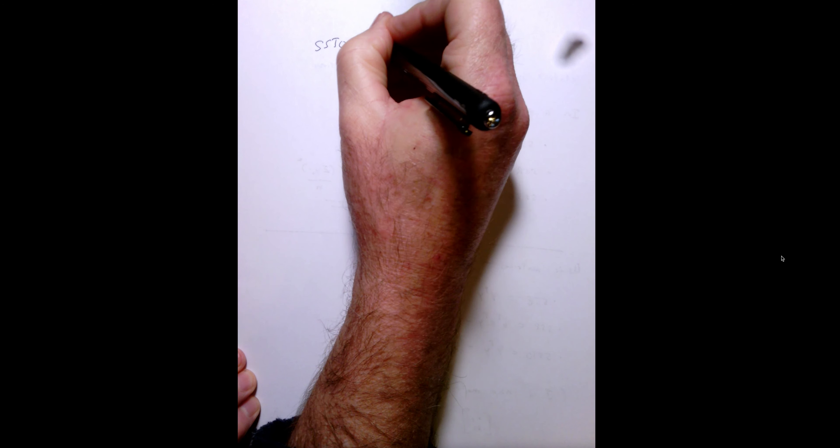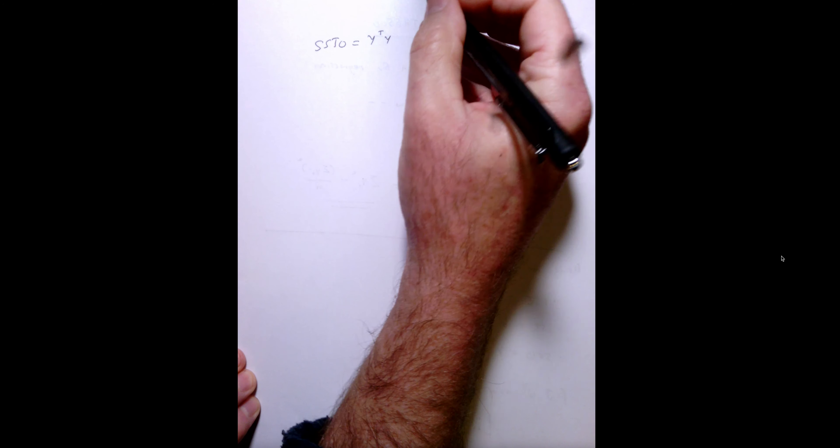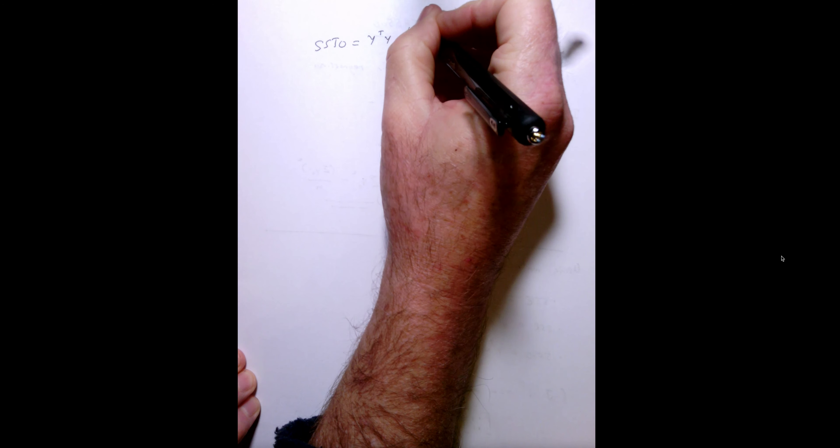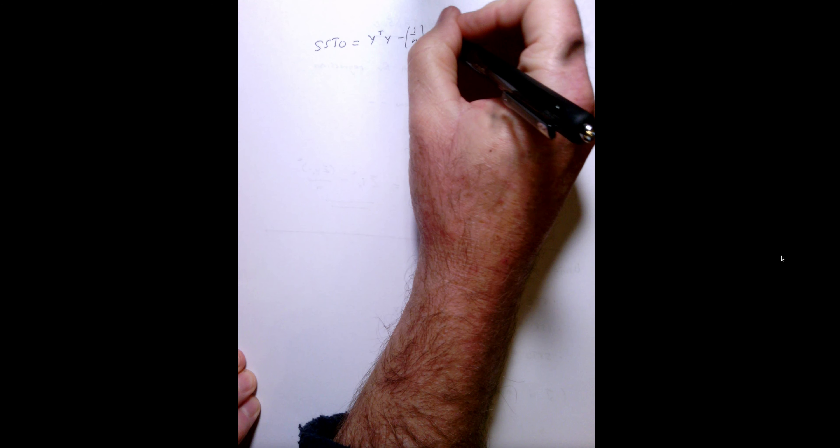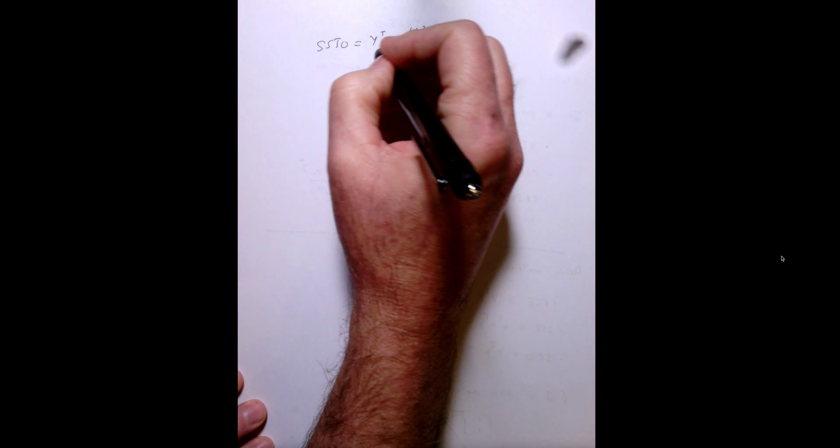So, we see now that moving into ANOVA using matrices - sorry, gang, you've probably determined by now that I can't write and speak, I'm not that talented - we see that we can calculate the sum of squares total using matrices by this relationship right here.